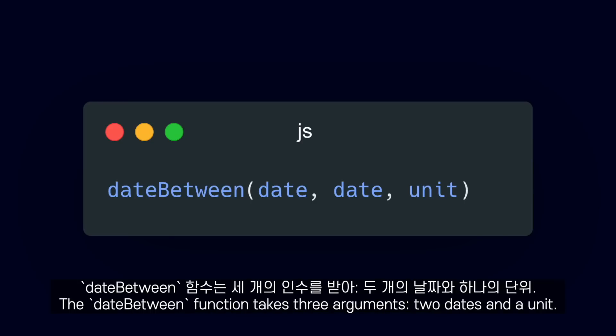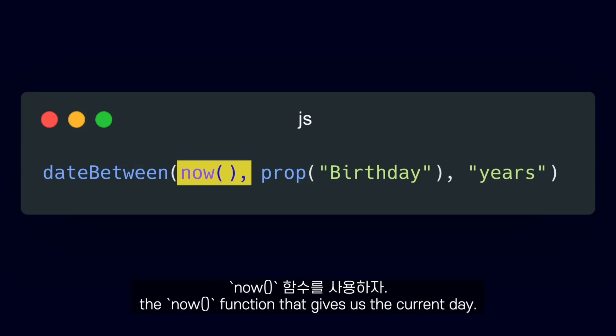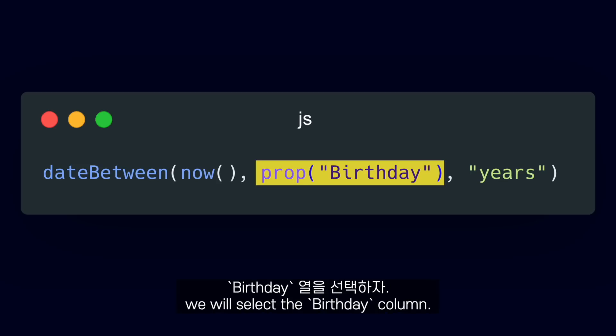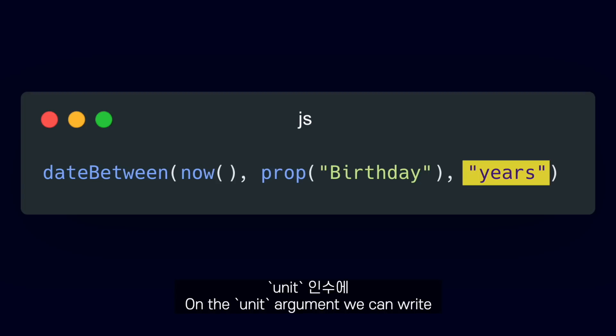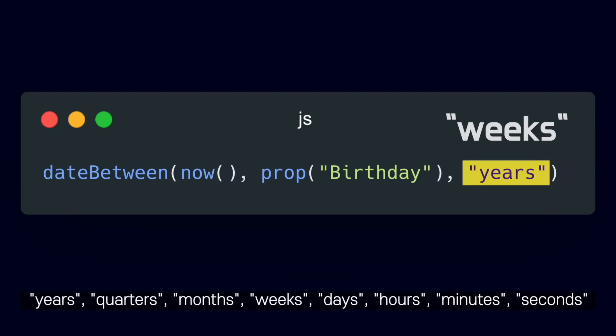The dateBetween function takes three arguments: two dates and a unit. For the first date, we are going to use the now function that gives us the current date. For the second date, using the prop function, we will select the birthday column. On the unit argument, we can write years, quarters, months, weeks, days, hours, minutes.